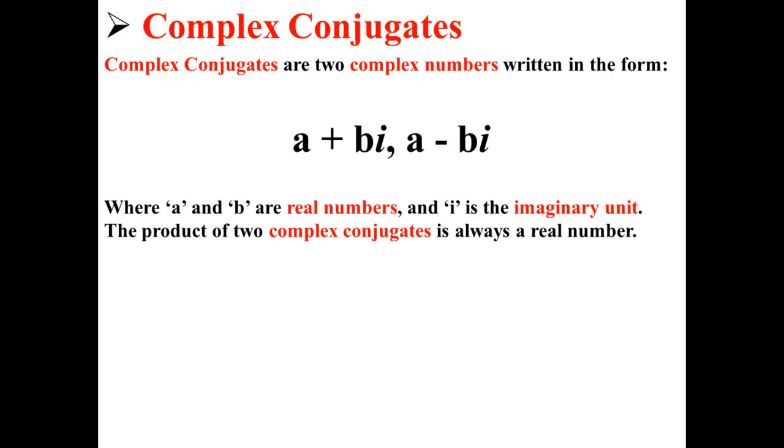Complex conjugates are two complex numbers written in the form a plus bi, a minus bi, where a and b are real numbers and i is again the imaginary unit. This is important to realize because the product of two complex conjugates is always a real number.